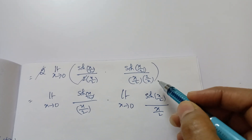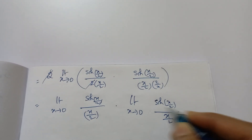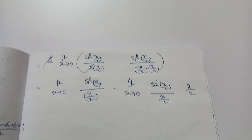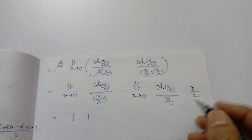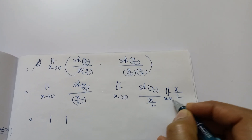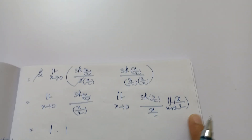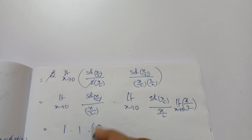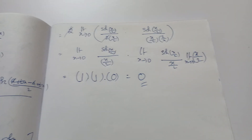Taking x/2 outside gives 2/x, and x/2 remains. This first part equals 1, this second part equals 1, and this last part is limit x tends to 0 of (x/2). Since the limit goes to 0, substitute x = 0: 0/2 = 0. So 1 × 1 × 0 = 0. That is the answer.